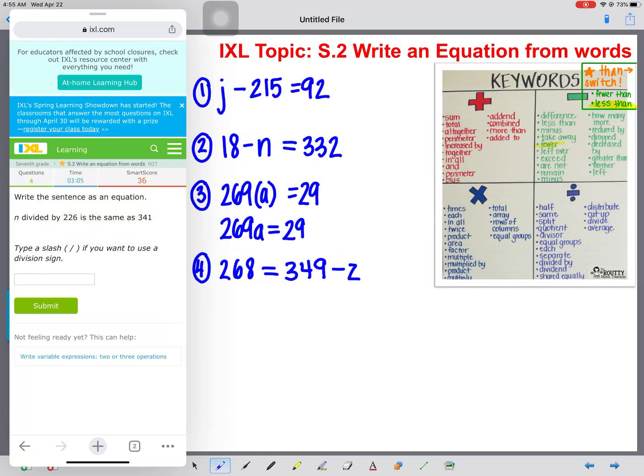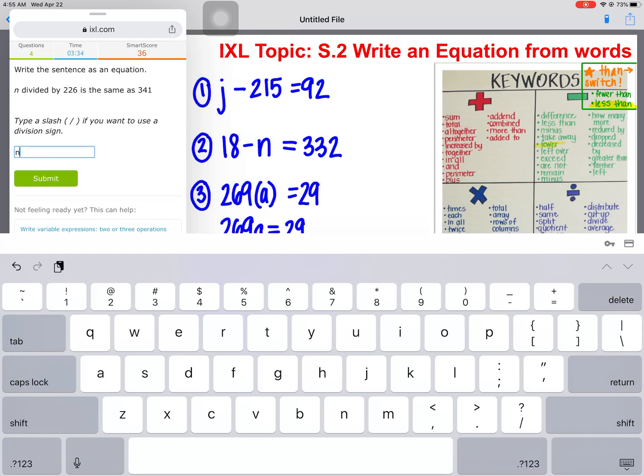Brilliant! Okay, write the sentence as an equation. Number five. n divided by 226 is the same as 341. So we're going to take our variable n divided by 226 equal to 341. Now it says here type a slash if you want to use a division sign. So what we're going to do is n slash 226 equals 341.